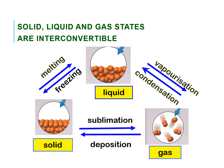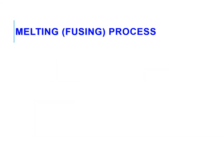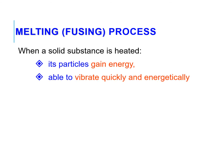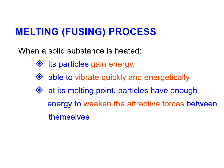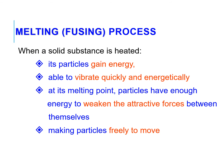As you can see, solid can form liquid by melting. Liquid freezes to become solid. And solid can turn into gas by undergoing sublimation, whereas gas is deposited to become solid. When a solid substance is heated, its particles gain energy and are able to vibrate quickly and energetically. At its melting point, the particles have enough energy to weaken the attractive forces between themselves, making the particles free to move. Here, solid is changing into liquid.